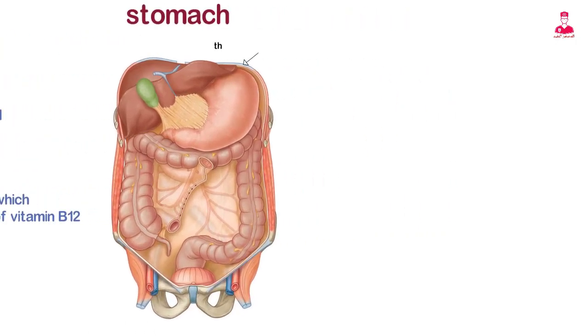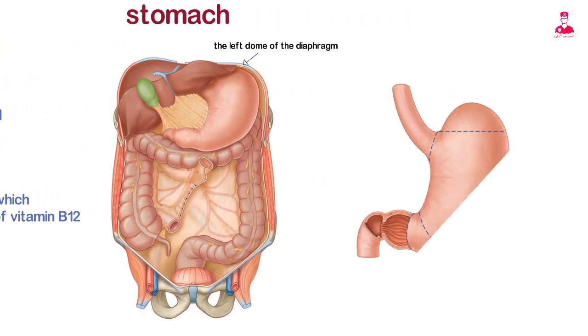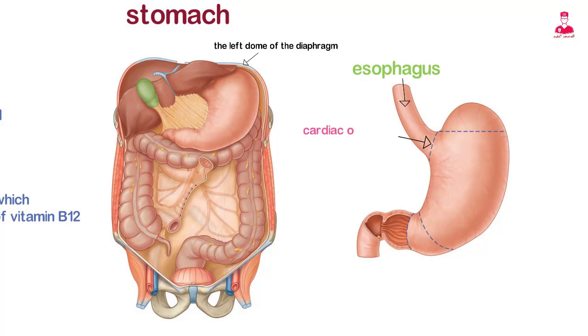The stomach is located under the left dome of the diaphragm, with the superior portion joining the esophagus at the cardiac orifice and cardiac sphincter, creating the gastroesophageal junction.